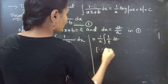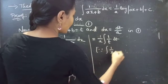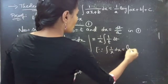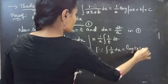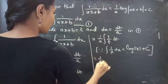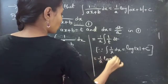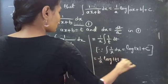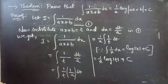Since we know that integral 1 by x dx equals to log mod x plus c, so this becomes 1 by a into log mod t plus integral constant c.